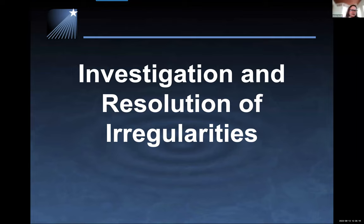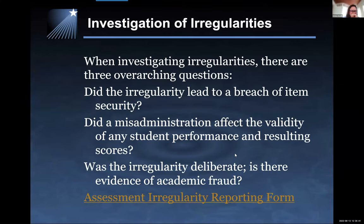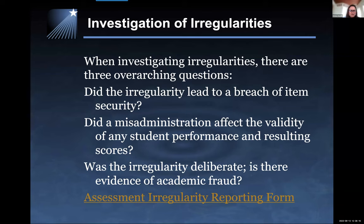Next, we'll look at investigation and resolution of irregularities. Investigation will outline steps to be taken by the local SAU in collaboration with the Maine Department of Education to understand the incident and its implications. Resolution is working with Maine DOE to optimally resolve irregularities and ensure valid results for all students. If an investigation is warranted, the appropriate state assessment coordinator will immediately contact the district assessment coordinator. When investigating irregularities, there are three overarching questions: Did the irregularity lead to a breach of item security? Did a misadministration affect the validity of any student performance and resulting scores? And was the irregularity deliberate — is there evidence of academic fraud?